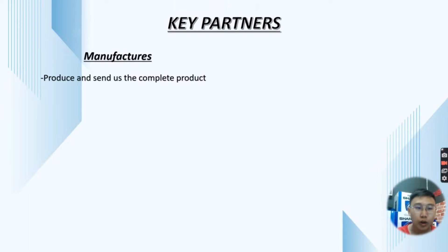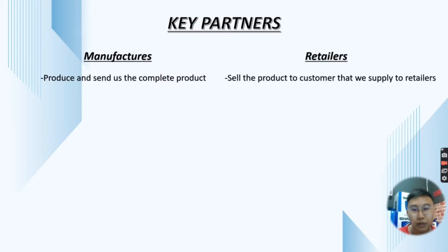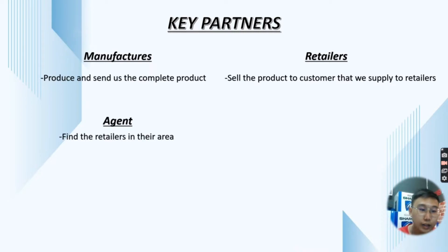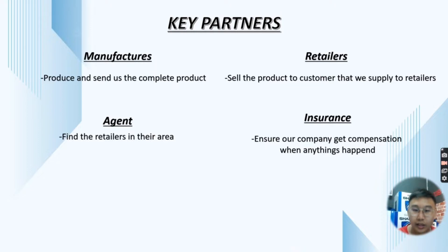First, it's about the Key Partners. We have Manufacturers — their role is to produce and send us the complete product. Next, Retailers, who sell the product to customers that we supply to them. Agents are very important because they help us find retailers in their area. Insurance ensures our company gets compensation when anything happens.